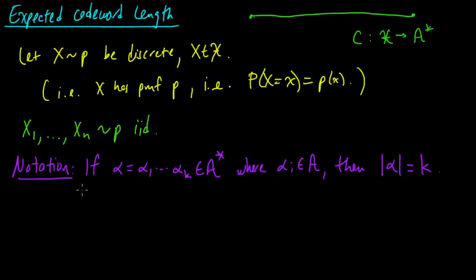Okay, just a straightforward definition. So maybe just a brief example. Let's say maybe alpha is 01101, then this notation would mean 5. And in this case, A would be like the set 0 and 1.